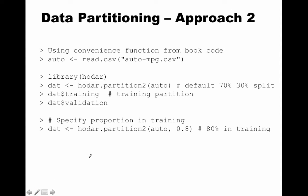That was the long approach. The short way of doing the same thing is to use the hodar package from my book. It has a function called partition2, which does everything we saw in the previous slide. You can just say hodar::partition2(auto). By default it creates a 70-30 split. After you do this, using dollar-sign training gives you the rows in the training partition, and dollar-sign validation gives the rows in the validation partition. There is also a hands-on activity on creating partitions in the book.